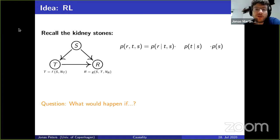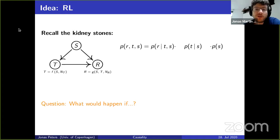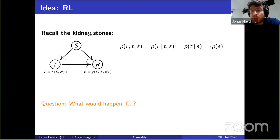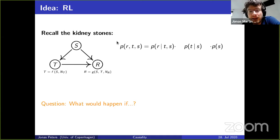The first thing is just a very high-level relation to reinforcement learning — this is an active field of research, and some of you already mentioned this in a question. This is again the kidney stone example, and one important factorization — you may have seen this before — is called the macro factorization. We are looking at the joint distribution and factorizing according to the conditionals: R given S and T, and T given S, and then just S. You can always do this, but now this is a causal factorization.